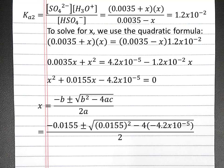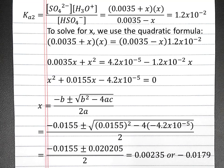We can substitute these values of a, b, and c into the quadratic formula. If you put these into your calculator, you should get 0.00235 or negative 0.0179. Only the positive value will make sense given our rice table.